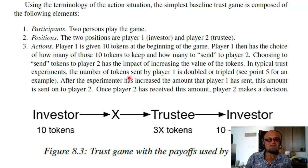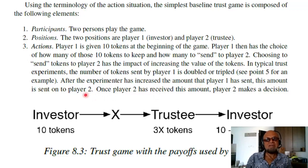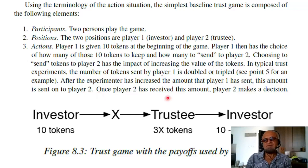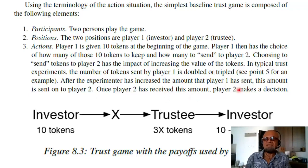In typical trust experiments, the number of tokens sent by player one is doubled or tripled. After the experimenter has increased the amount that player one has sent, this amount is passed on to player two. Player one decides how much to send, somebody in the middle amplifies it by two or three times, and then passes it to player two, the trustee. Once player two has received this amount, player two has to make a decision. This is where the dilemma comes in.